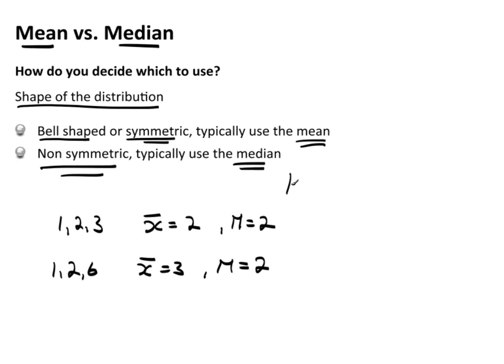If you put this on a number line, the first data set, 1, 2, 3, very symmetric. The mean and the median is right here at 2. The second one, 1, 2, and 6, the mean gets pulled in this direction. With more data that looks like this, you would see that this distribution is skewed right. So the data is skewed. The mean gets pulled in the direction of the tail.